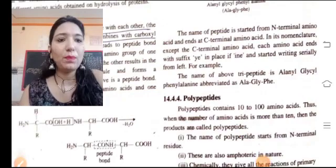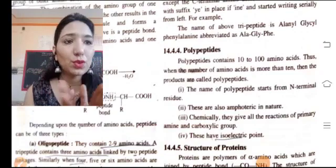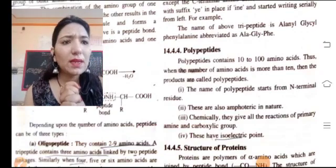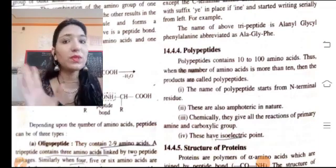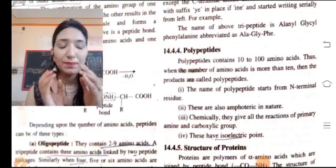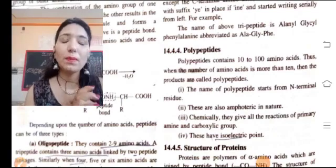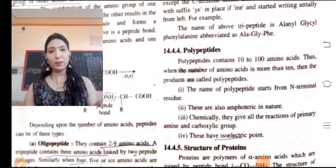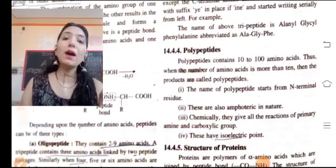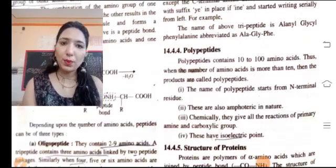Now we have polypeptide. Polypeptide contains 10 to 100 amino acids. In protein there are a lot more, in polypeptide there can be 10 to 100. Then the products are also called polypeptide, not protein. Protein must have a lot of amino acids.